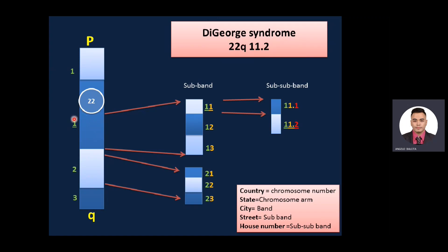Geneticists divide the long arm of the chromosome into regions or bands. Band number one is the closest to the centromere, and as numbers increase, they are farther from the centromere. The same applies to the short arm. If you expand and look at region one, you have sub-bands numbered the same way — one is closest to the centromere. So you have sub-bands 1.1, 1.2, 1.3, and these are read as 'one one,' 'one two,' 'one three' — not 'eleven.'